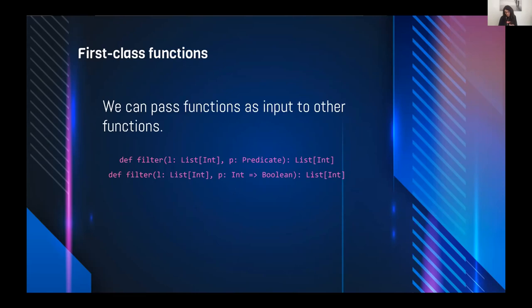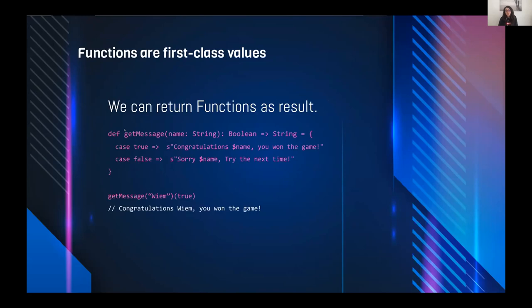We can pass a function like Int => Boolean as input to another function. For example, a 'filter' function that accepts another function as an argument is called a higher-order function. We can also have a function that returns another function as a result — that is also a higher-order function.